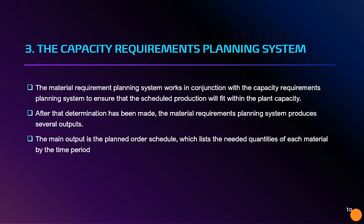The third is the capacity requirements planning system. The material requirements planning system works in conjunction with the capacity requirements planning system to ensure that the scheduled production will fit within the plant's capacity. After that determination has been made, the material requirements planning system produces several outputs, and the main output is the planned order schedule, which lists the needed quantities for each material by time period.